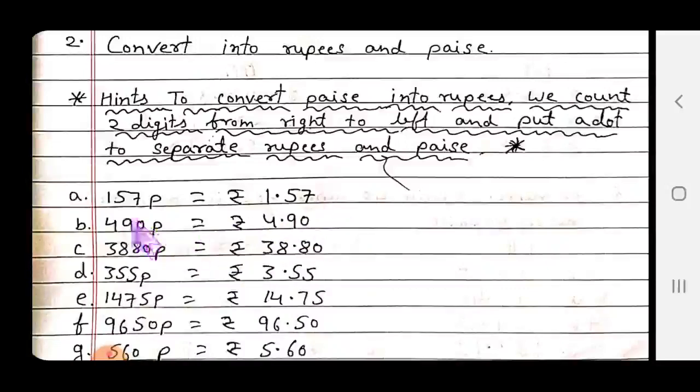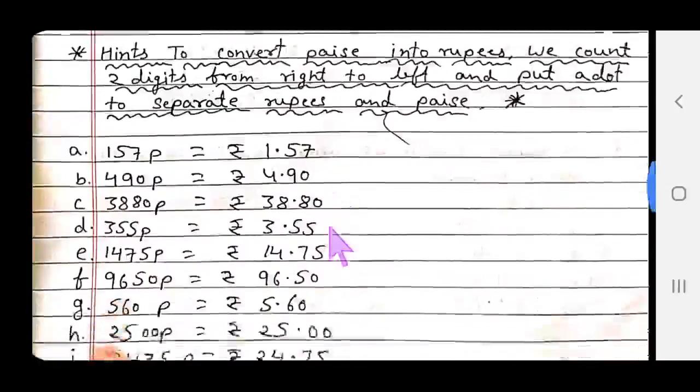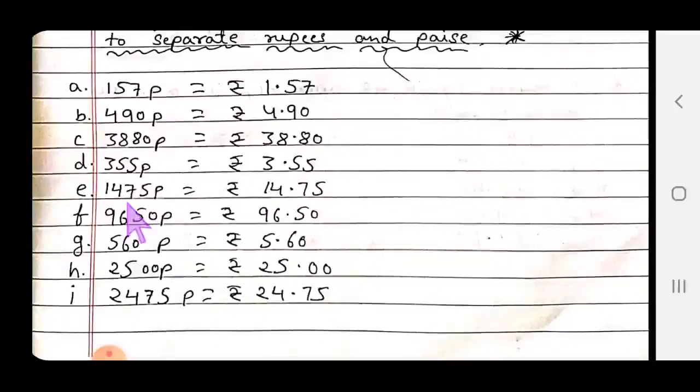The right side number will be paise and left side number will be rupees. 157 paise - count 2 digits: 1, 2, so 1 rupee 57 paise. 490 paise - count 2 digits, so 4 rupees 90 paise. 1475 paise - count 2 digits from right, 5, 7, then 4, 1, so 14 rupees 75 paise. This is how you complete activity 2.